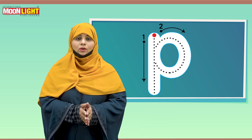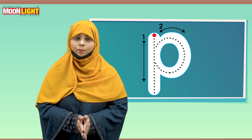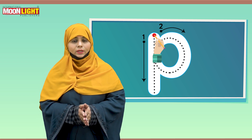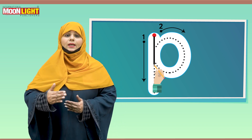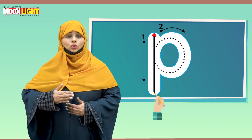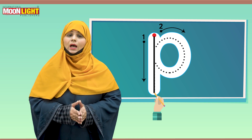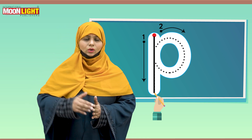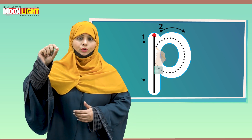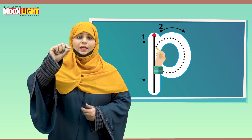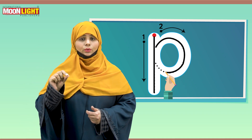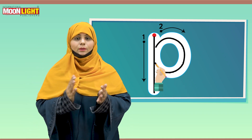It will become letter P. After that, open your workbooks and start working. There is a red dot in letter P. What you have to do is take out your pencil, put your pencil tip on the red dot, and go down, down, down and stop till the dotted line ends. After that, there is a half circle on the upper part of the straight line — put your pencil there and go round, round and stop. It will become letter P.